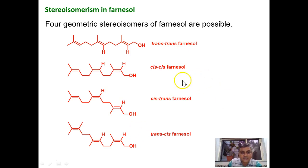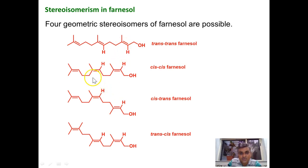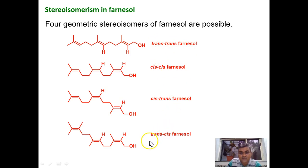Finally, let us consider the cis-trans isomerism in Farnesol. There are two double bonds where cis-trans isomerism exists. Both can be trans, giving a trans-trans isomer; both can be cis, giving a cis-cis isomer; or one can be trans and the other cis, giving trans-cis and cis-trans isomers. Therefore there are four possible stereoisomers of Farnesol.